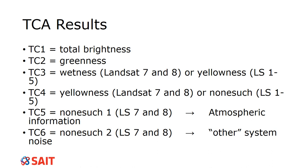The results follow these specific terms found in any literature you read about the TCA. TC1, the first band, is total brightness — how bright is the image? It represents all the energy entirely in that pixel from the contribution of every single band. Soil is often very, very bright, so if TC1 is very bright we know there's a lot of soil.